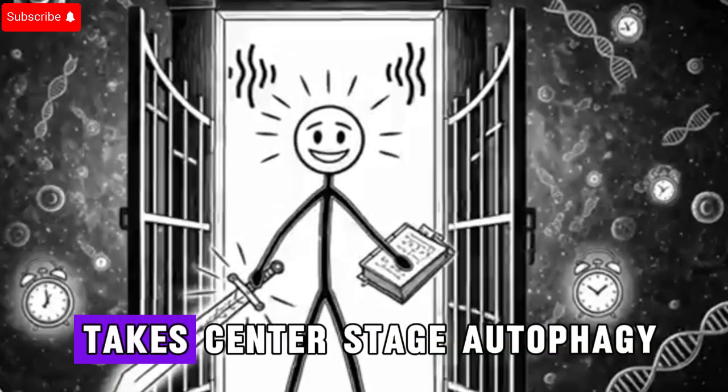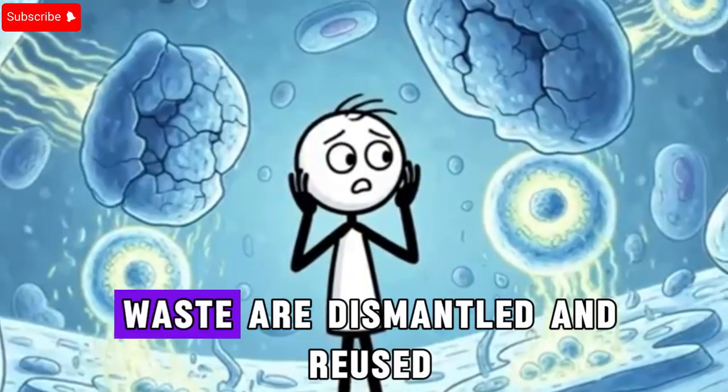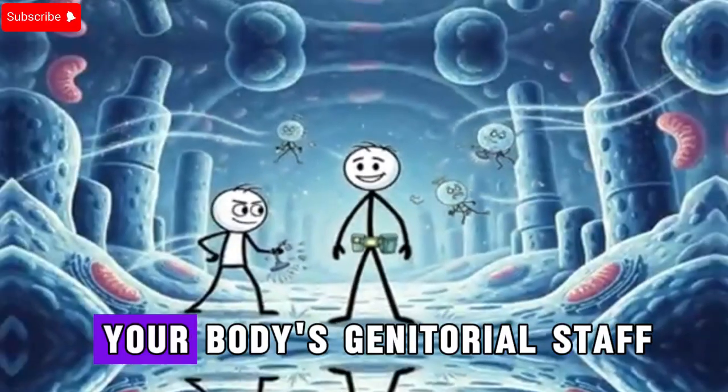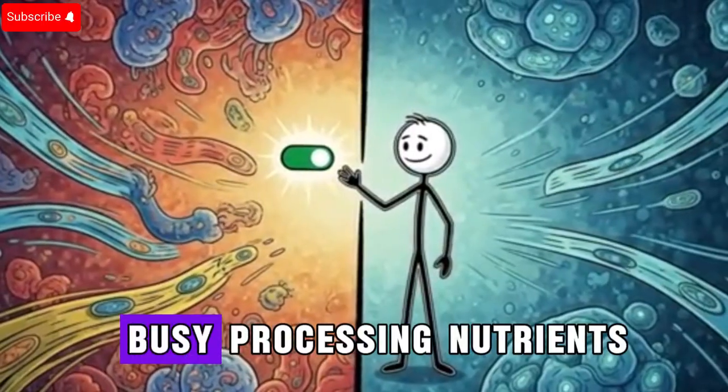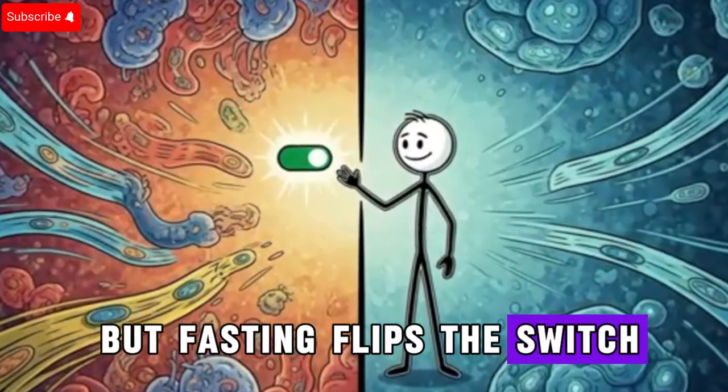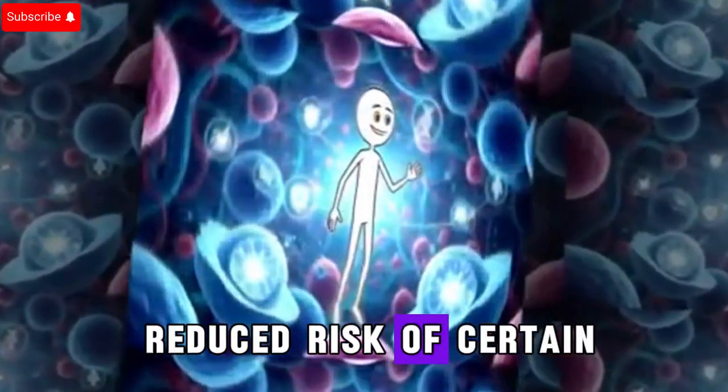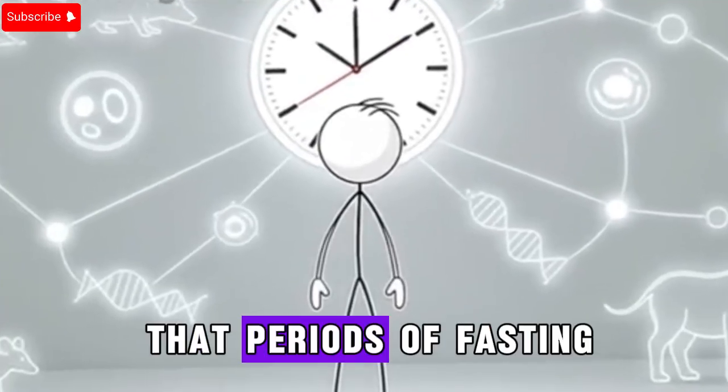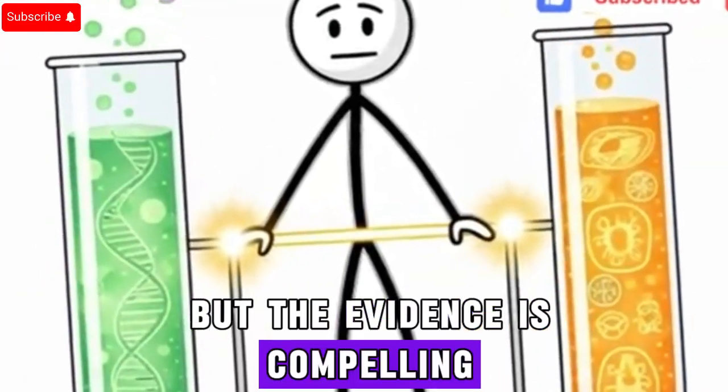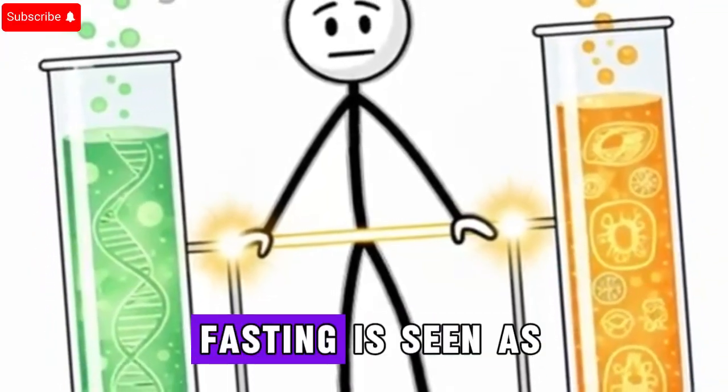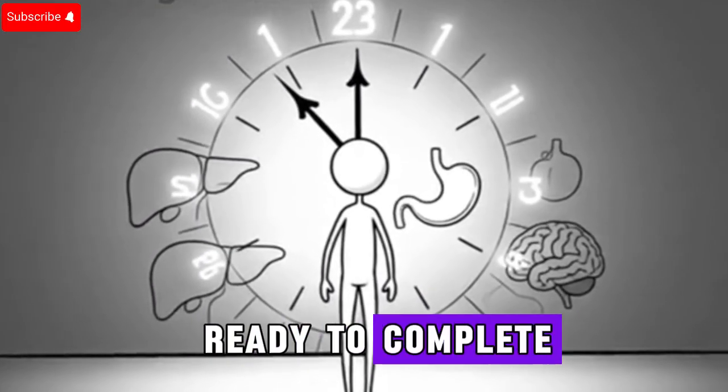By the 22nd hour, one of fasting's most fascinating processes takes center stage: autophagy. This is the body's internal recycling system where damaged proteins, broken cell parts, and waste are dismantled and reused. Think of it as your body's janitorial staff, finally given the chance to do a deep clean. Under constant feeding conditions, autophagy is minimal because cells are too busy processing nutrients. But fasting flips the switch, giving cells the chance to repair themselves from the inside out. Autophagy is linked to improved immunity, reduced risk of certain diseases, and even longevity. This cleanup is one of the main reasons fasting is seen as more than just skipping meals. It's a full biological reset.